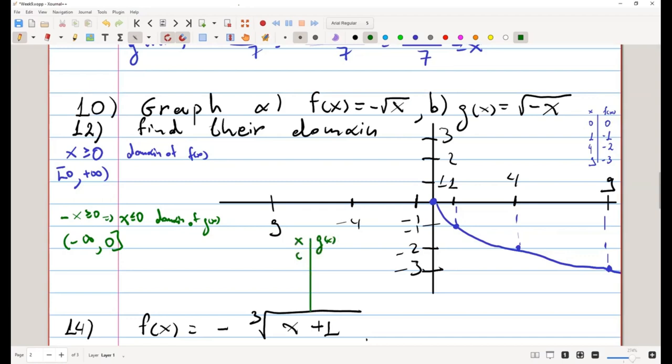We have x and g(x). Again, the easy value is at zero, it is zero, because minus zero is itself. At minus one, it'll become square root of minus minus one, which is square root of one, which is one.